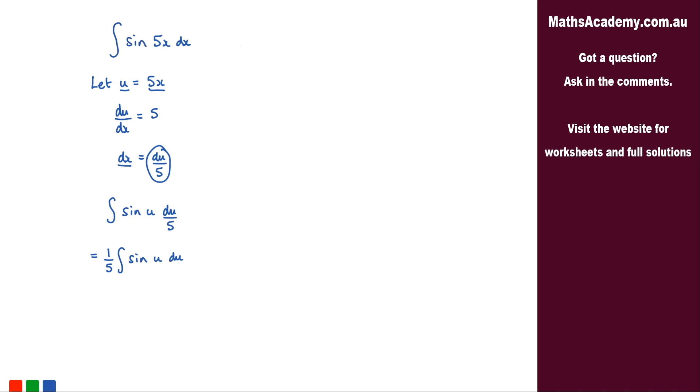Now the integral of sine is negative cosine. So what we end up with is negative 1 over 5 cosine of u and u, well u is actually 5x. Let's put that back in again. So negative 1 over 5 cosine of 5x and we just need to add on the constant of integration.